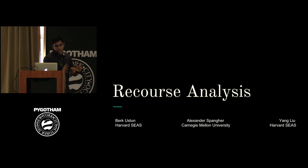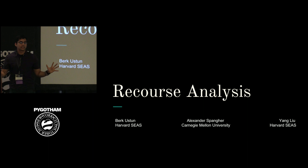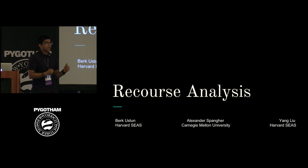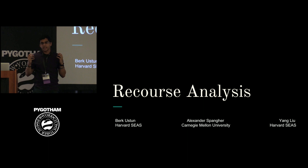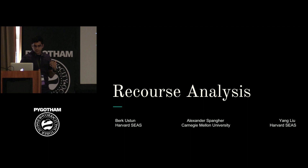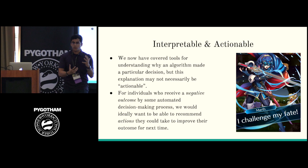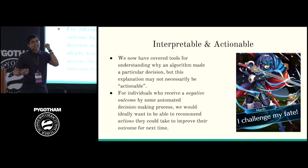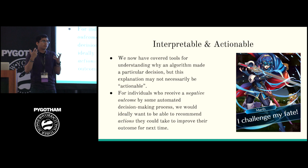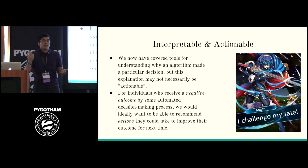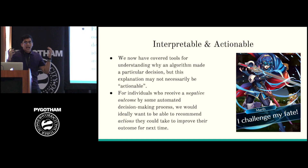The last thing I want to talk about is recourse analysis — a really cool topic from a paper published just two weeks ago. This is brand new: when I submitted this proposal to PyGotham, this wasn't even included. Interpretability tells you how you can understand what an algorithm is doing, but this explanation may not be actionable. You understand why you didn't get a bank loan — but what can you do about it? The idea of recourse is: if an individual got a negative outcome — denied a bank loan or denied parole — what actions could they take to improve their outcome?